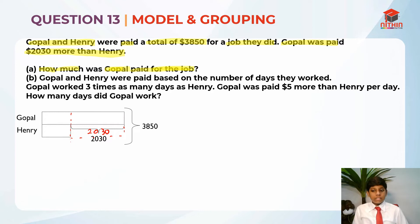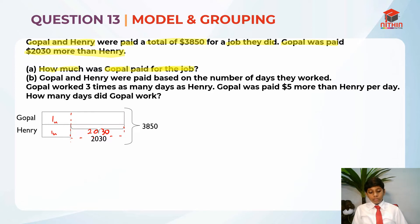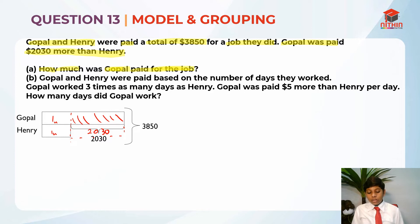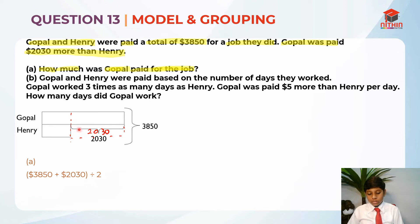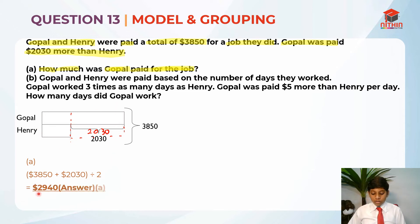Using scissors is like cutting off Gopal's extra amount. If we want to find Henry's salary, we take ($3,850 − $2,030) ÷ 2. That's how the scissors and play-doh method works. For Part A, we take ($3,850 + $2,030) ÷ 2 because when we add it, Gopal and Henry become two equal units. So Gopal's salary is $2,940.